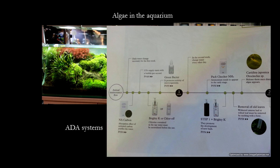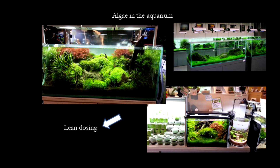Some tanks are algae-free, some are not, but overall it is a pretty good system. The main difference between this and the other common system — the EI methodology by Tom Barr — is that ADA is a lean dosing system. Nutrient levels in the water are very low; on nitrate and phosphate test kits, the values can be consistently zero.